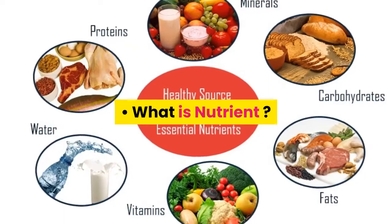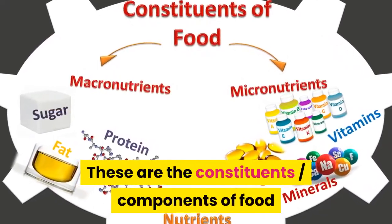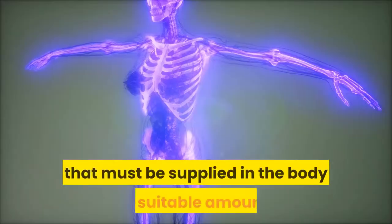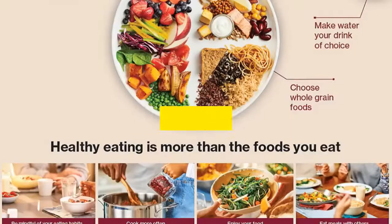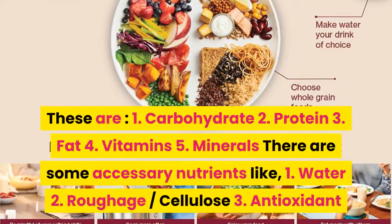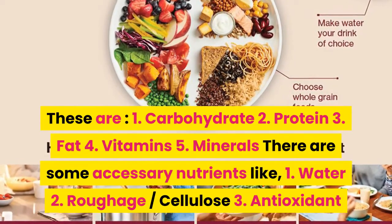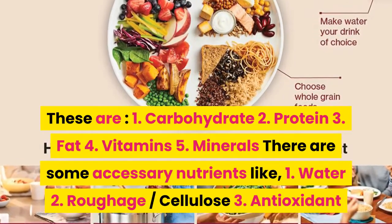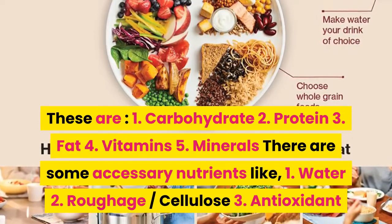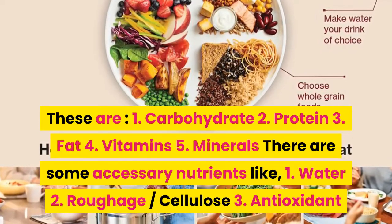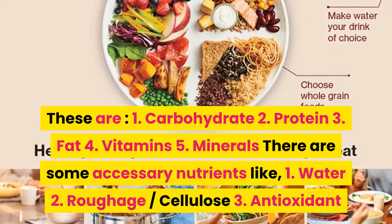What is a nutrient? These are the constituents and components of food that must be supplied to the body in suitable amounts. These are: 1. Carbohydrate, 2. Protein, 3. Fat, 4. Vitamins, 5. Minerals.